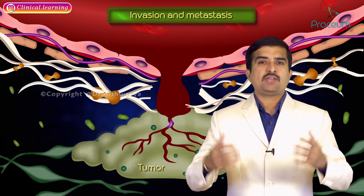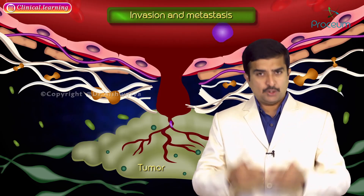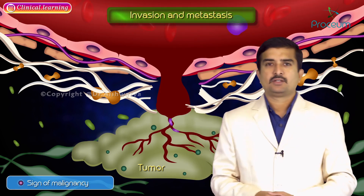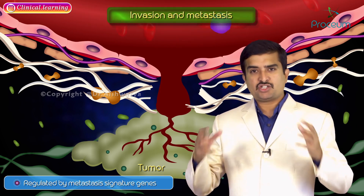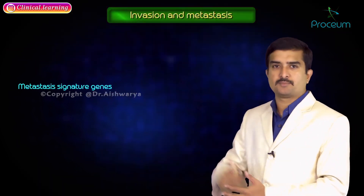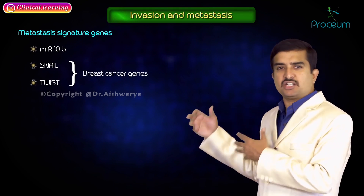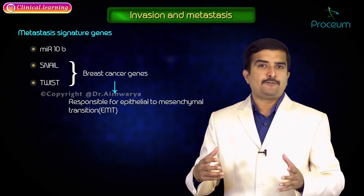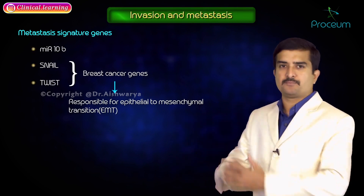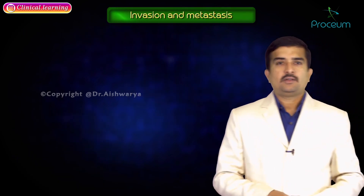Invasion and metastasis is a sign of malignancy, regulated by metastasis signature genes and prevented by metastasis suppressor genes. The metastasis signature genes include MIR 10B, snail, and twist. Snail and twist are mainly breast cancer genes responsible for epithelial-to-mesenchymal transition. Ezrin is involved in rhabdomyosarcoma as well as osteosarcoma.